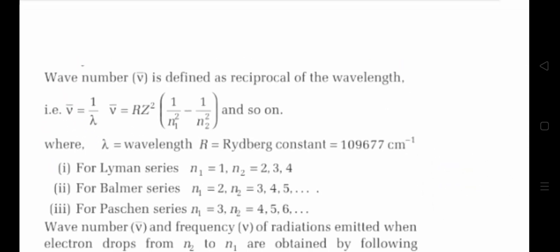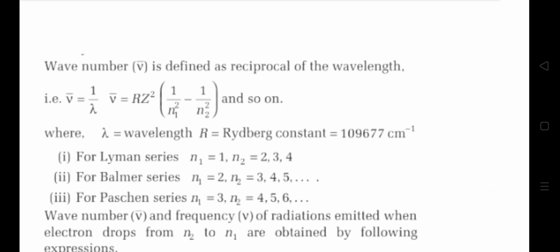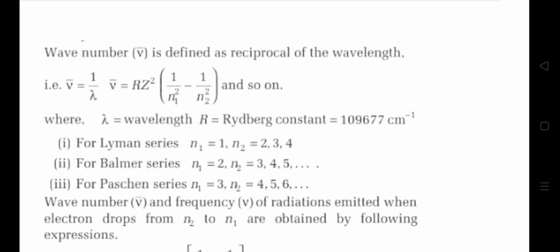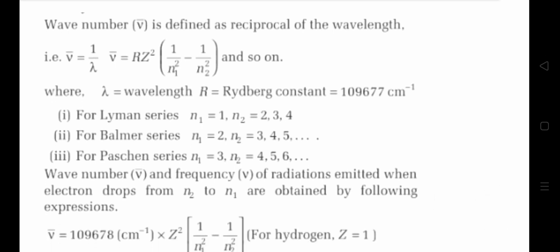Wave number is defined as the reciprocal of wavelength: wave number equals 1 divided by lambda. The wave number formula is: mu-bar equals R times z-squared times (1 divided by n1-squared minus 1 divided by n2-squared), where R is the Rydberg constant. For the Lyman series, n1 equals 1 and n2 equals any higher energy level (2 or more) — transitions to principal quantum number 1. For the Balmer series, transitions come from a higher energy level to level 2. For the Paschen series, transitions come from a higher energy level to n equals 3.